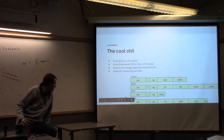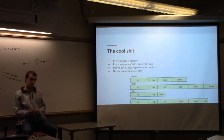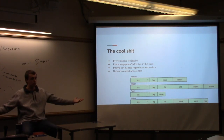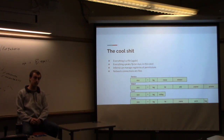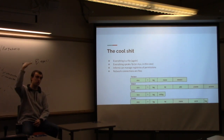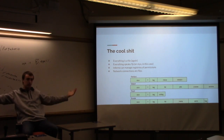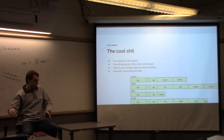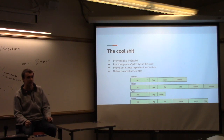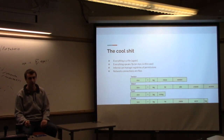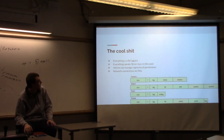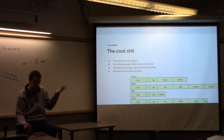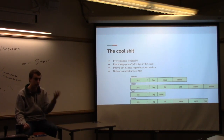So everything's a file again, everything speaks STYX. Inferno manages a registry — a registry is just a list of services. You can have multiple registries, everyone can have their own. The public grid project has a registry with all the grid services posted in it. When you attach to it you can iterate through the registry and mount all of these services and put them all in mount slash grid slash service or whatever. There are registries for permissions, for who owns what, for access.